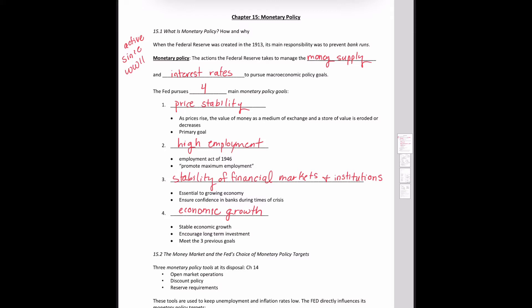The Fed's number one goal is price stability. Price stability is important because when prices rise, the value of money is impacted. Rising prices decrease the value of money as a medium of exchange and store of value, so we want to make sure prices stay stable so money can function effectively. When high inflation occurred in the 1970s, chairman Paul Volcker focused primarily on fighting inflation as his top policy goal, and that's why to this day price stability remains the most important goal of the Fed.